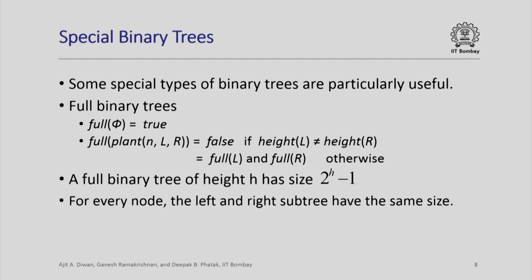There are some special types of binary trees useful in applications. Full trees are defined as follows: the empty tree is always full. Full of a tree obtained by planting l and r at node n is true only if the heights of l and r are equal and both l and r are themselves full. A full binary tree of height h consists of a left and right subtree each being full of height h-1, giving a total node count of 2^h minus 1.